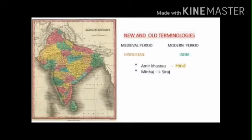The second topic is new and old terminologies. The significance, usage and meanings of terminologies change over time. In a modern context, foreigner means a person who is not an Indian. During the medieval period, a foreigner wasn't any stranger who appeared in a village or city.